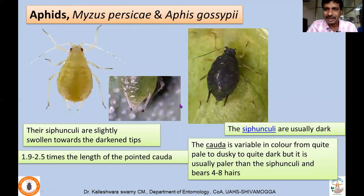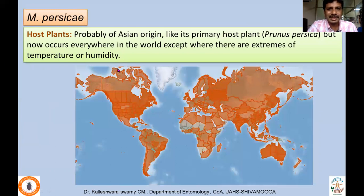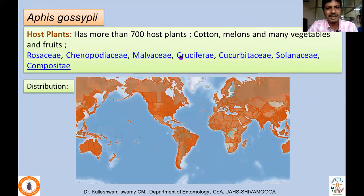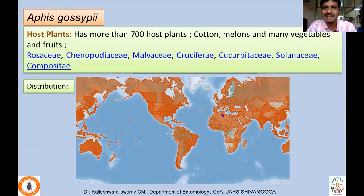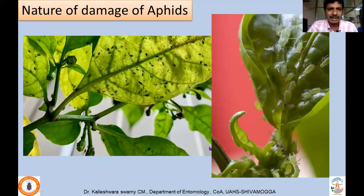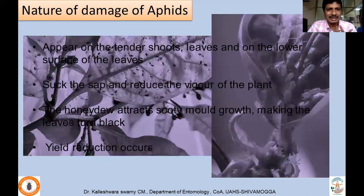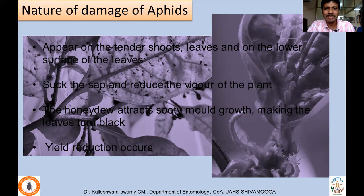Myzus persicae is mainly of Asian origin but has spread worldwide. Aphis gossypii (melon aphid or cotton aphid) damages more than 700 host plants across different families and is distributed worldwide. Both species cause serious losses to chili through direct feeding damage and by transmitting viral diseases. They suck sap, secrete honeydew that spreads on the plant surface, promoting sooty mold growth — resulting in yield reduction.